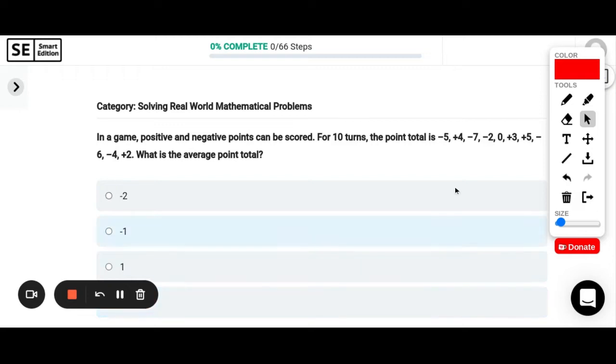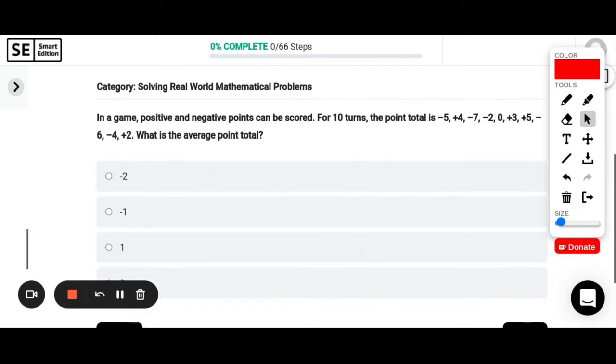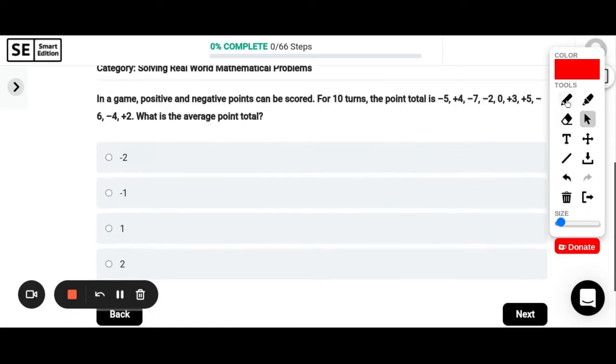In a game positive and negative points can be scored. For 10 turns the point total is as follows. This is our data. What is the average point total? So to find the average I need to add them all up. So I'm going to add all of these up and divide by the total number that I have which is 10. So add them up and divide by 10.